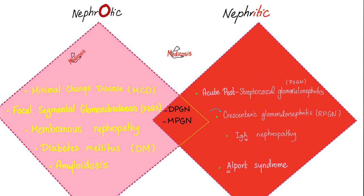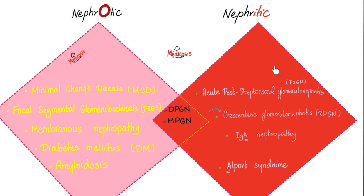You're losing protein or you're losing blood. But with diffuse proliferative glomerulonephritis and membranoproliferative glomerulonephritis, you could be losing both protein and blood in the urine. So you get high protein in the urine, low protein in the blood, edema, hyperlipidemia, hypertension, hematuria, jugular venous distension, oliguria, high BUN and creatinine, red blood cell casts in the urine, and more.